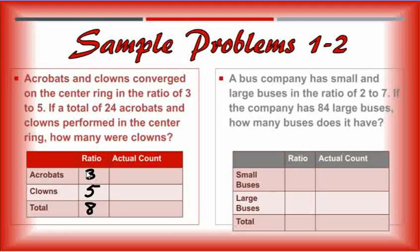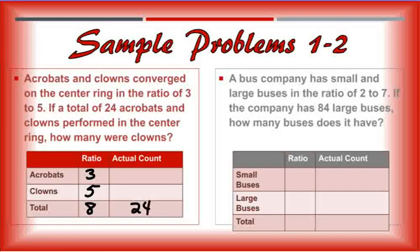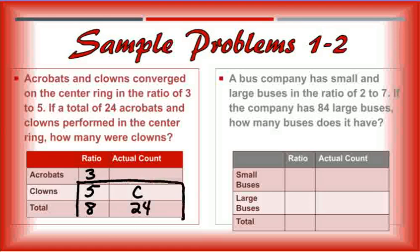It says if a total of 24 acrobats and clowns. So that's the total of actual count. I put that into the total. How many were clowns? So I need to find C for clowns. So all I need to do for this one would just take these bottom two boxes here and solve.